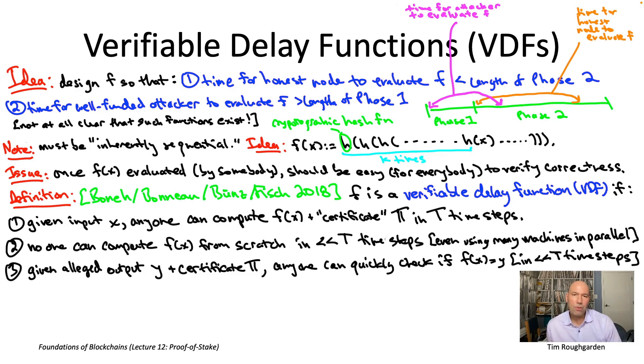But that's not a big deal to add. If you have a VDF that satisfies one through three, you can get a VDF that satisfies one through three plus for all practical purposes uniform by composing it with a cryptographic hash function for which you're comfortable making the random oracle assumption. And actually it's a good exercise for you to think through exactly that.